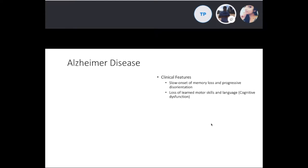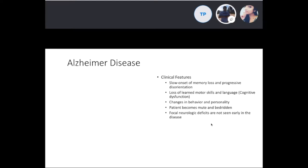Patients can also have loss of learned motor skills and language — that's called cognitive dysfunction — as well as changes in behavior and personality. They often become mute and bedridden. Focal neurologic deficits are not seen early in the disease. Most cases are sporadic and seen in the elderly; the risk doubles every five years after age 60.